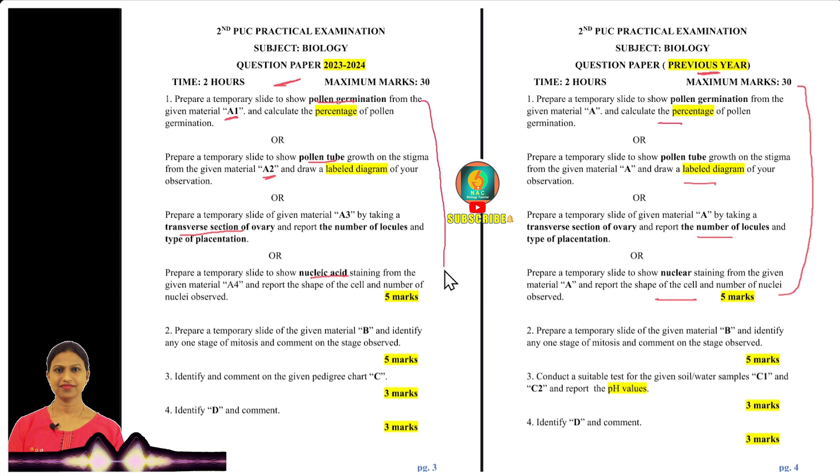This year, question number 1 will change. Question number 1 will have five experiments instead of four. You need to prepare one additional experiment now. So this is an important change in question number 1. Here is the B experiment.